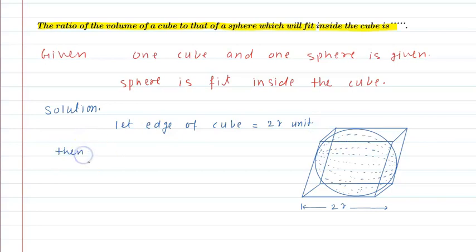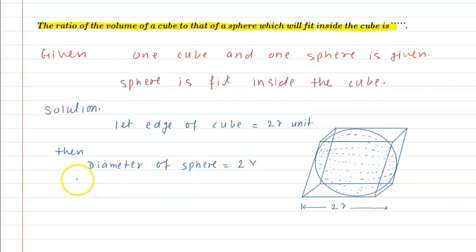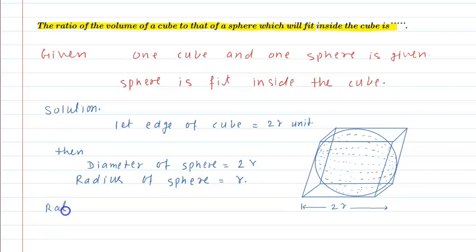We can say the diameter of the sphere is equal to the length of the cube — that means the diameter is 2R. So from here, the radius of the sphere is equal to 2R divided by 2, that means R. So the required ratio is the ratio of volume of cube to volume of sphere.